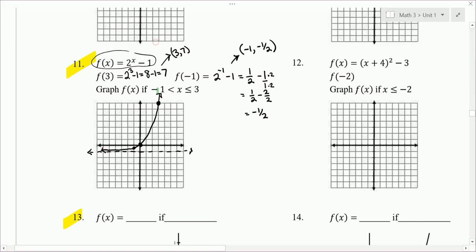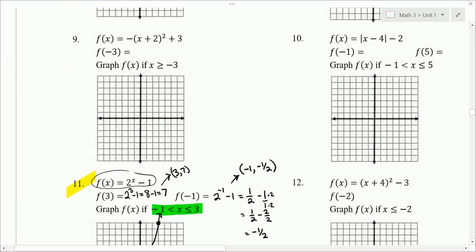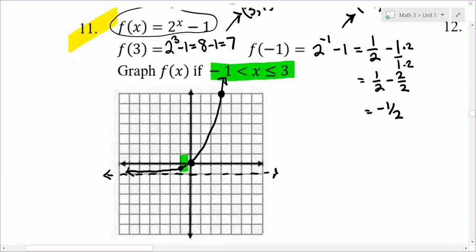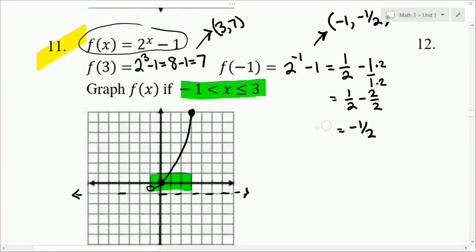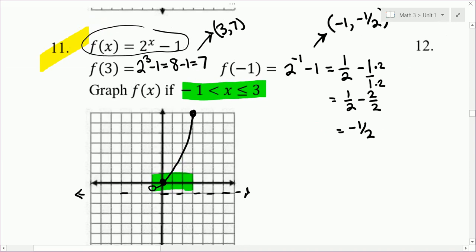Now let's take a look at the restriction. It says negative 1 less than x less than or equal to 3. The x is between negative 1 and 3. So we're only looking at values between negative 1 and 3, right there. So everything outside of that we need to erase. So I don't want, I only want this part right here.